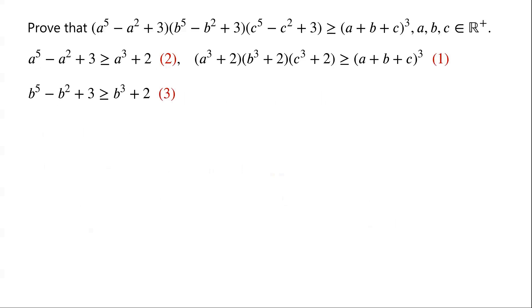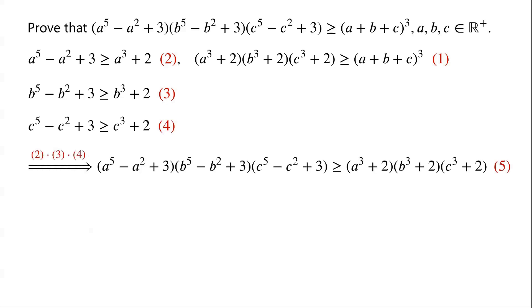Similarly, B⁵ - B² + 3 ≥ B³ + 2, and C⁵ - C² + 3 ≥ C³ + 2. We label these as inequalities (2), (3), and (4) respectively. Now we multiply inequality (2) by inequality (3) and by inequality (4).